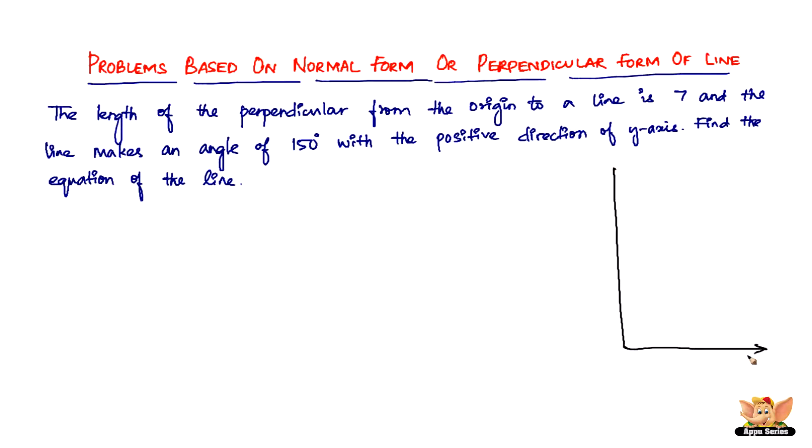So this is the y-axis, this is the x-axis, and then we've got this line which makes an angle of 150 degrees with the y-axis. The perpendicular is here like this, which measures seven. So it'll be a right angle here.